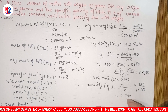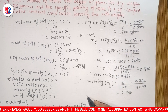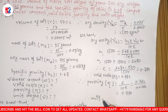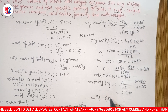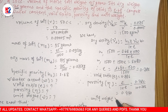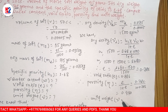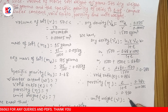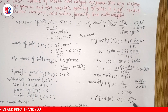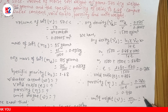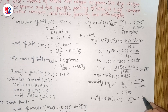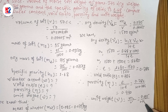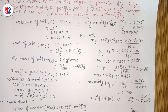Finally, unit weight: unit weight equals total mass divided by volume. Mass is 0.095 kg and volume is 0.00005 m³. This gives the unit weight of the soil sample.